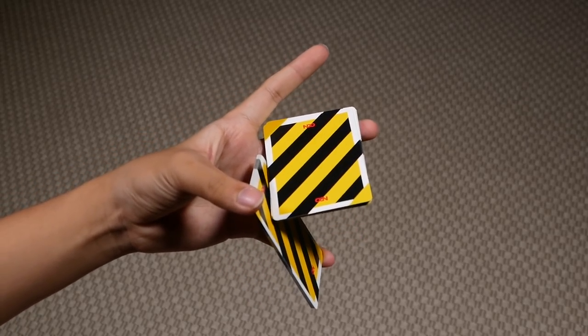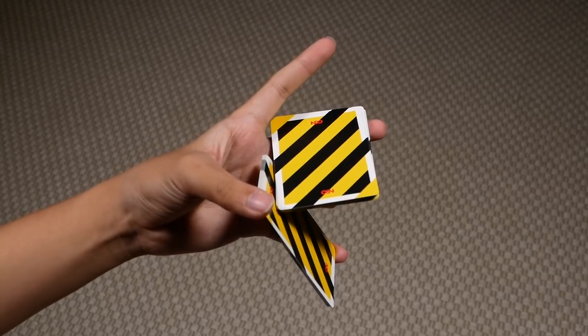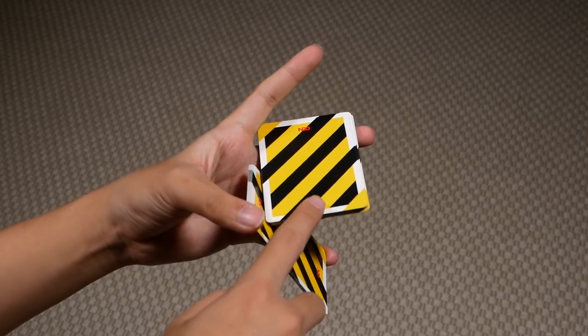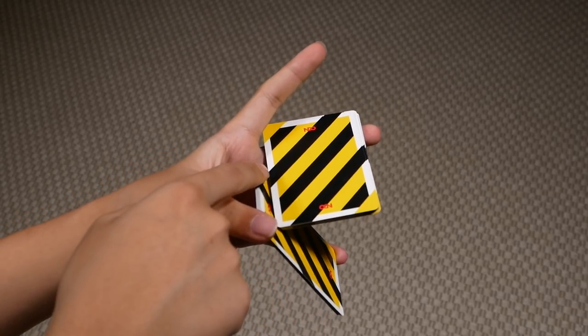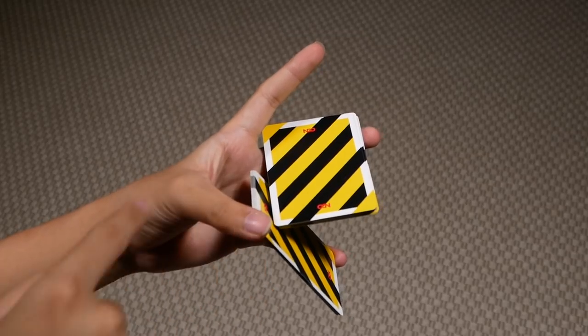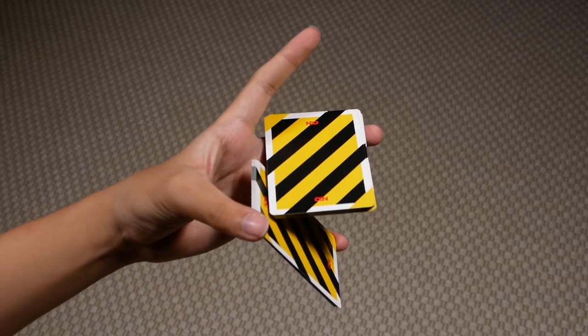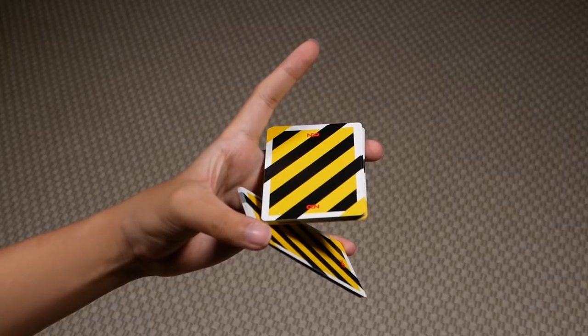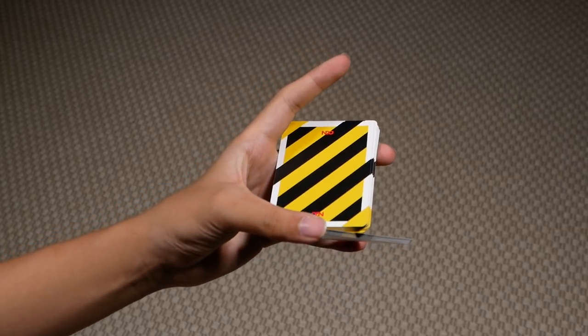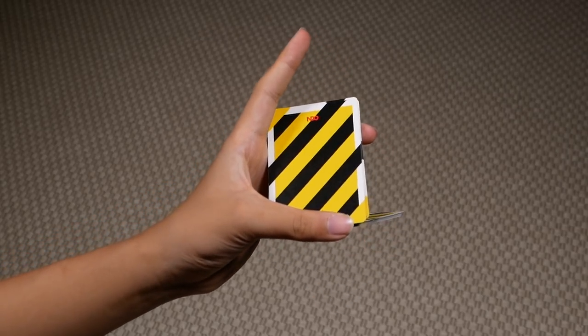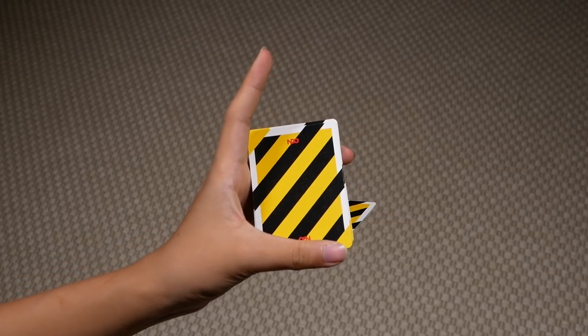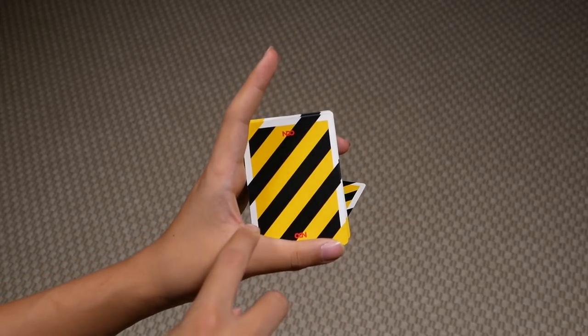Right, and you should be able to reach this point where this top packet now contacts the corner of the bottom packet applying pressure here. And with that pressure you should be able to allow this bottom packet to pivot slightly like so until the bottom of this packet here aligns with your thumb.